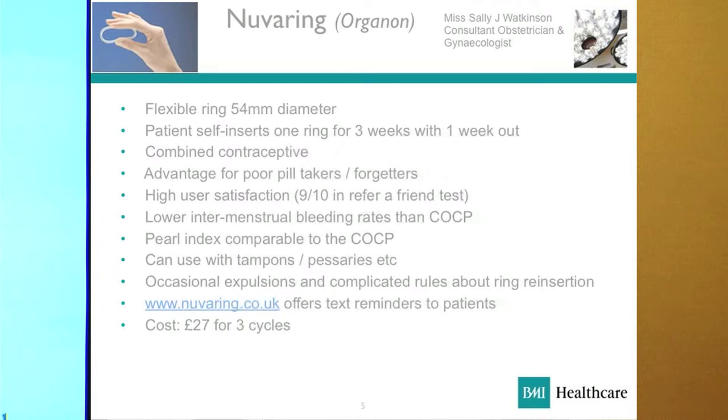The main advantage I see for NuvaRing is that it's very good for patients who simply forget their pill. The standard alternative might have been a long-acting contraceptive such as Implanon or a coil for patients with poor compliance, but the problem is those patients can't maintain control themselves — once the coil or Implanon is in, they don't feel they take responsibility. NuvaRing offers higher user satisfaction, and it comes up strongly in recommend-a-friend tests. There are also lower intermenstrual bleeding rates than the combined oral contraceptive pill.